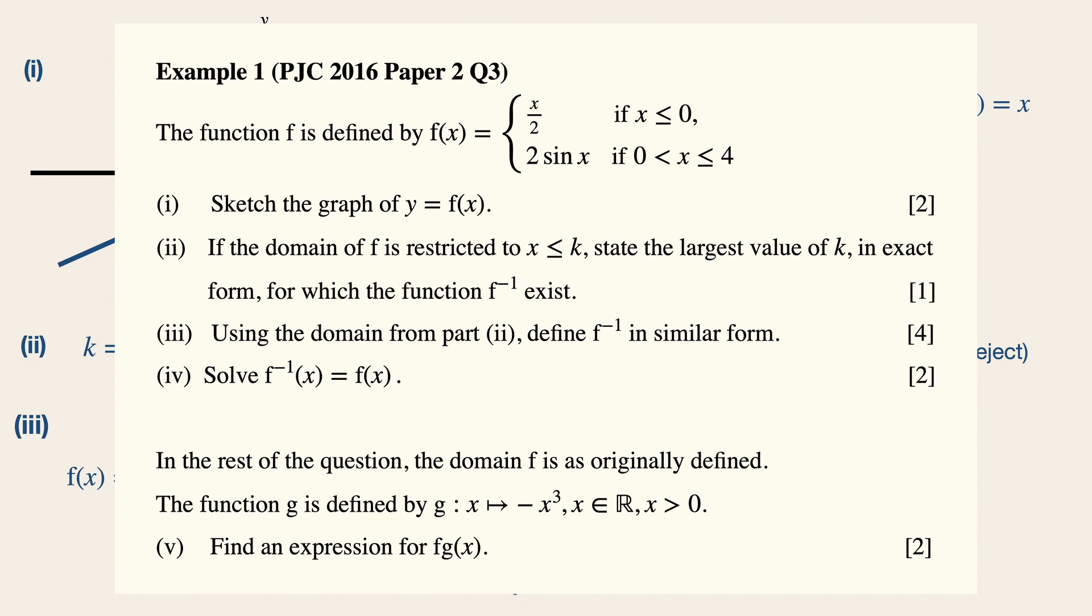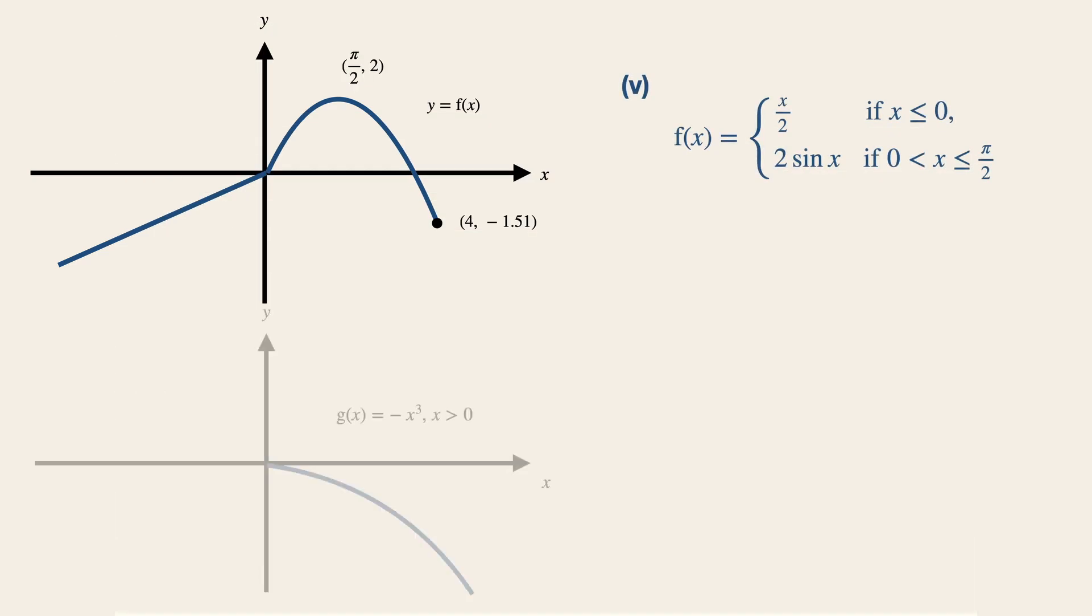Now for the last part, we are given a function g, which is defined by minus x cubed, and x is more than 0. So we are going to find an expression for the composite function fg. Now at this point, don't just jump into substituting the function g into all the pieces of functions of f, which is x over 2 and 2 sin x. We first need to understand the condition for a composite function to exist.